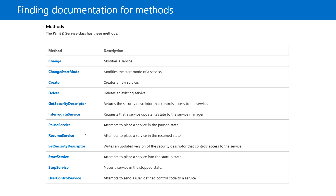As we have seen, root\CIMv2 is the default namespace. Repository classes that are not in the root\CIMv2 namespace are typically not as well documented. It is better to do an internet search, which provides the fastest way to find documentation for the respective class you are looking for. Just type the class name in a search engine and the first few results will typically give you the documentation for that class.